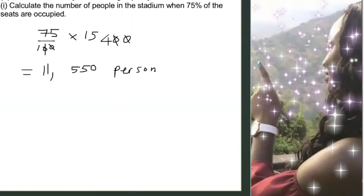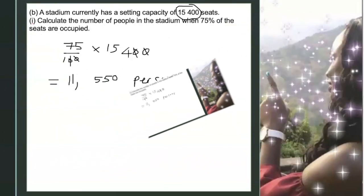For this question, all we do is find 75% of the seat capacity that was given. Since they say we have 15,400 seats, if 75% of the seats are occupied, then we can find out how many persons occupy those seats by finding 75% of 15,400, to arrive at 11,550.